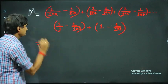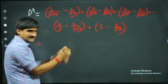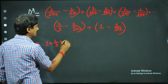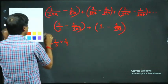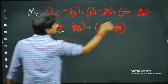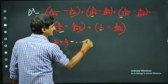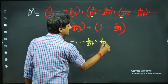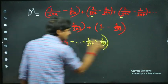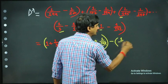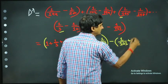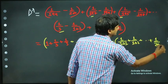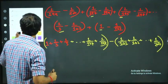Collecting all positive terms: 1 + 1/3 + 1/5 + ... + 1/197 + 1/199. Collecting all negative terms: −(1/101 + 1/102 + ... + 1/200). Now I want to simplify this by adding and subtracting the missing terms.